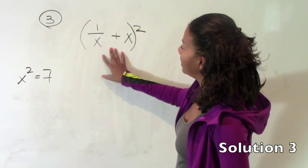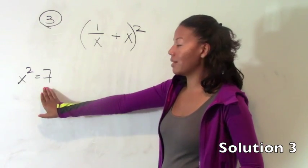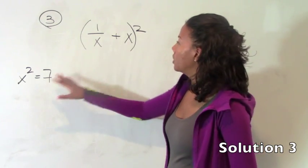So if we expand this, we are going to get it in terms of x squareds and all we have to do whenever we have an x squared is substituting the 7.